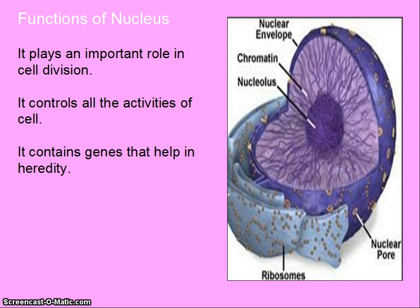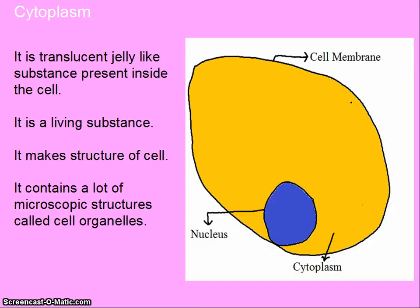Cytoplasm. It is a translucent jelly-like substance present inside the cell. It is a living substance and it makes the structure of the cell. It contains a lot of microscopic structures called cell organelles.